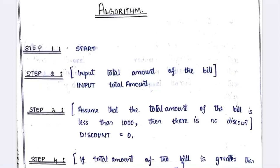The question is: write a C program to find the total amount, which has to be input by the user. If the total amount is greater than 1000 rupees, then the user gets an 8% discount. If it is less than 1000, then there is no discount.